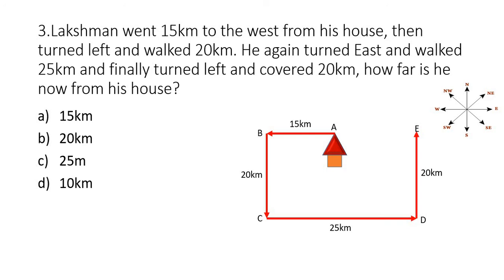So how far is he now from his house? I'm dividing CD into two parts based on the length of AB — so it is 15 and the remaining is 10. Now joining A and E, you can observe that CD equals BE. So the distance between A and E is 10 kilometers.